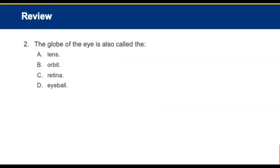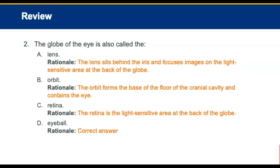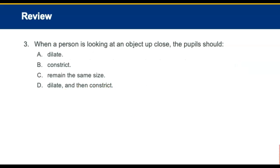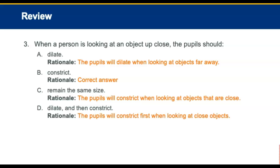The globe of the eye is also called the eyeball — answer D. When a person is looking at an object up close, the pupil should constrict, allowing light to move to the back of the eye.